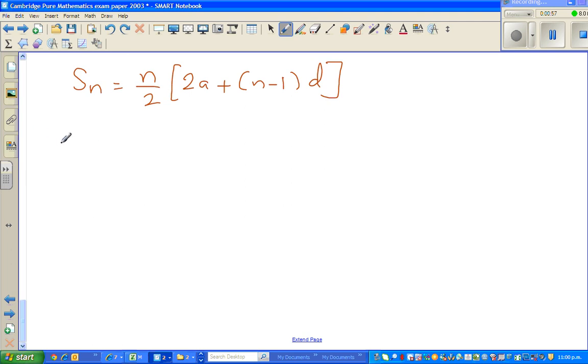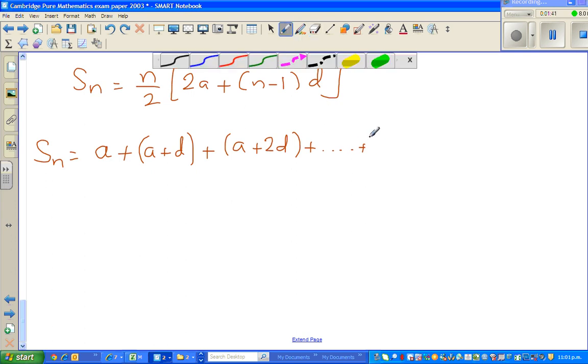In any arithmetic progression, you start with A, that's the first term, and then you keep on adding the difference. So can I write S_N is equal to A plus A plus D in brackets, this is 1D, plus A plus 2D plus dot dot dot.